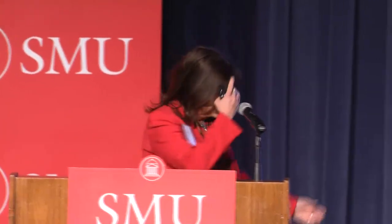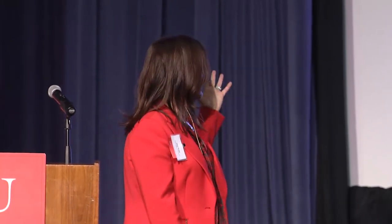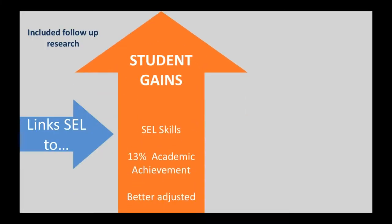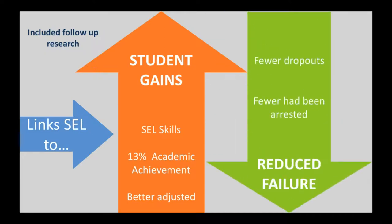There was another meta-analysis, more recent — Durlac's was 2011, this is 2017 by Taylor and colleagues. About 100,000 students in 82 schools. The difference was this study did a follow-up, following students into young adolescence and early adulthood. Social and emotional skills went up; students embedded those skills. Achievement increased by 13%. And they were better adjusted — fewer dropouts, and fewer had been arrested. The research shows that it works.